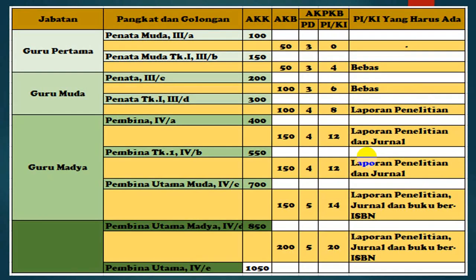Dari 4B ke 4C, angka kredit PKB-nya sama persis, yaitu PD sebanyak 4 dan PIKI sebanyak 12, dengan syarat yang sama: harus ada laporan penelitian dan juga harus ada jurnal. Kemudian dari 4C ke 4D, PD-nya minimal 5 dan PIKI-nya sebanyak 14. Dari 14 PIKI ini harus ada 1 laporan penelitian yang diseminarkan di sekolah, kemudian jurnal, dan satu buku yang ber-ISBN. Jadi ada 3 syarat, jika salah satu tidak ada maka tidak bisa naik ke 4D.